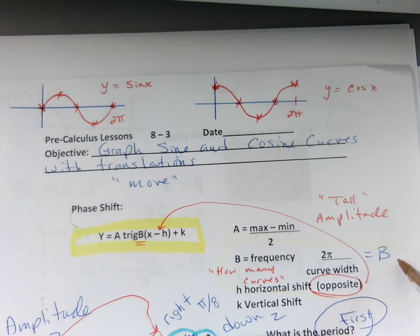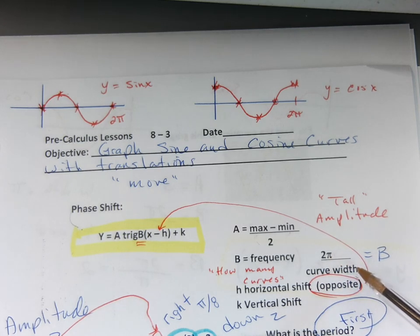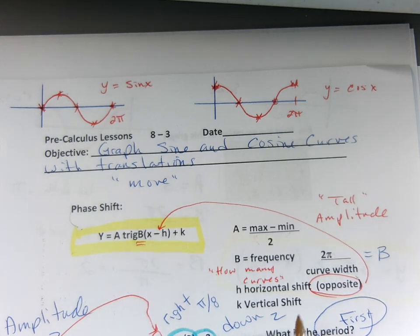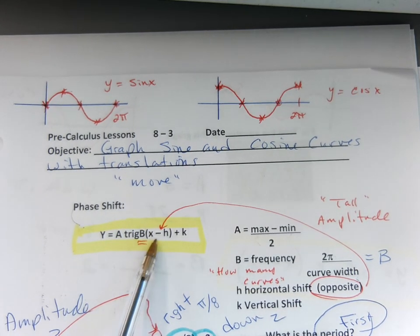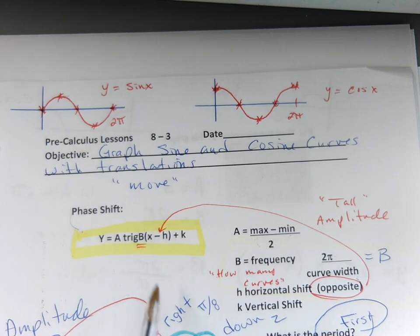Or vice versa, if you want to find the width of the curve, it's 2π divided by b. The horizontal shift is inside the parentheses, always the opposite direction. And the vertical shift is either up or down, and that's the number on the end.